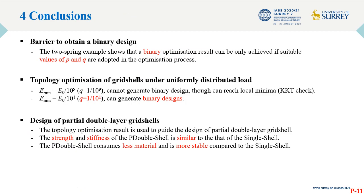Based on our research, we can draw the following conclusions. The two-spring example reveals that the binary design can only be achieved if suitable values of P and Q are adopted. For topology optimization of gridshells, binary designs can be achieved with Q equals to 1 over 10. Compared to the single layer gridshells, the partial double layer gridshells consumes less material, but it is more stable.